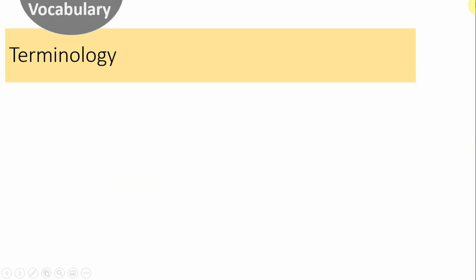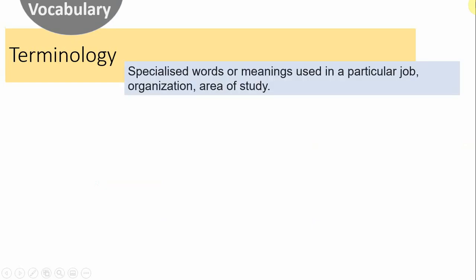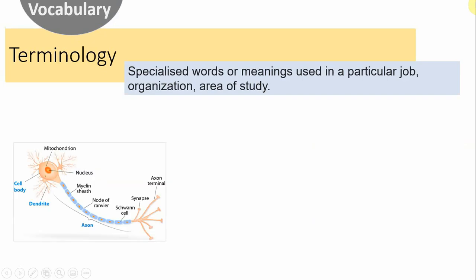Vocabulary number two today is terminology. This is specialised words or meanings used in a particular job, organisation or area of study. You are familiar with terminology because you come across it in your everyday lives all the time. When you're in science lessons, you are coming across terminology for that particular subject — cell, nucleus, dendrite, on this example here.